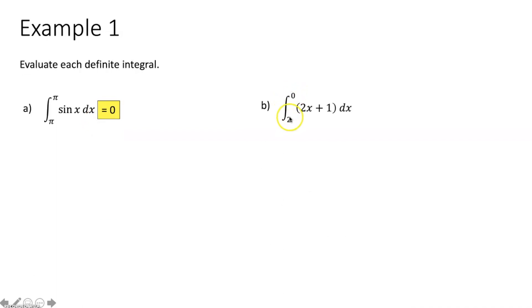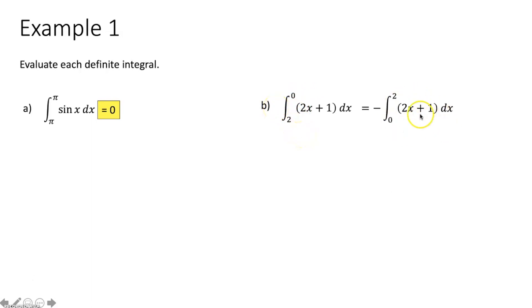Part b, we have the integral from two to zero of two x plus one dx. Note that the lower limit of integration is greater than the upper limit of integration. Since we can't integrate backwards, we have to switch our lower and upper limits of integration. When we do that, we put a negative sign out front of our integral. Because we haven't learned the fundamental theorem of calculus yet, we're going to evaluate this integral graphically using a geometric formula.